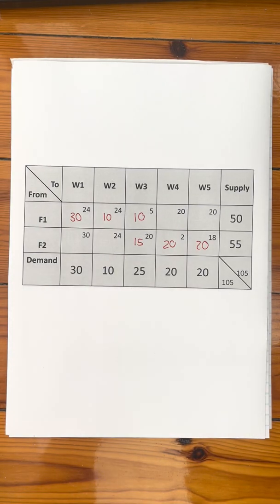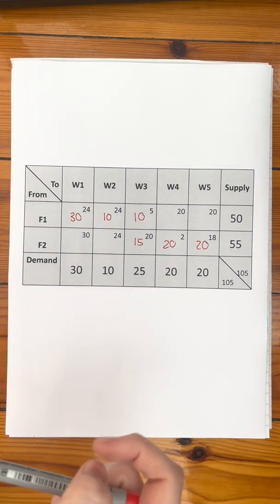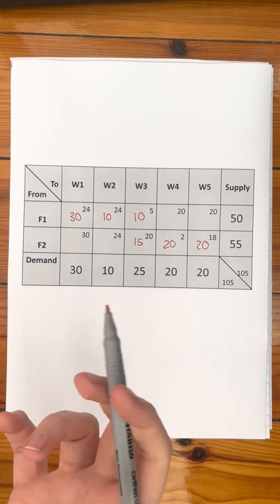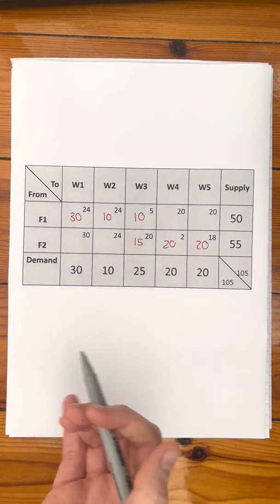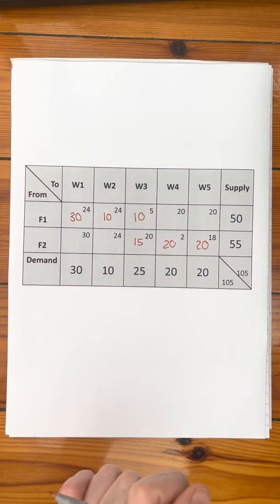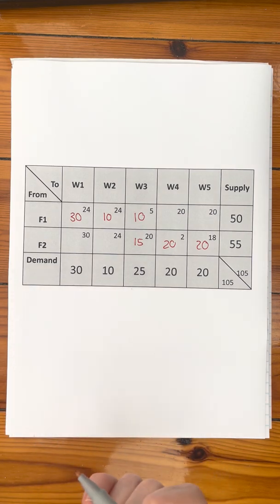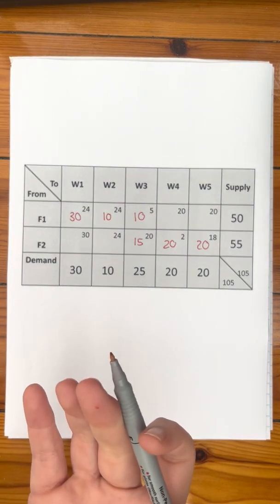Let's do Modi's method. We have the initial basic feasible solution, which we've done using the northwest corner method. Now let's do the first iteration of Modi's method to find the next tableau, or the next set of decision variables.